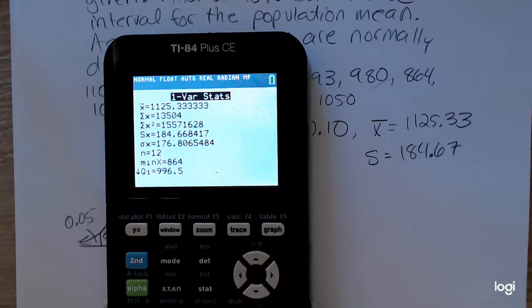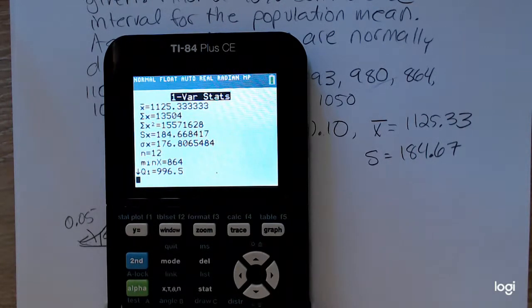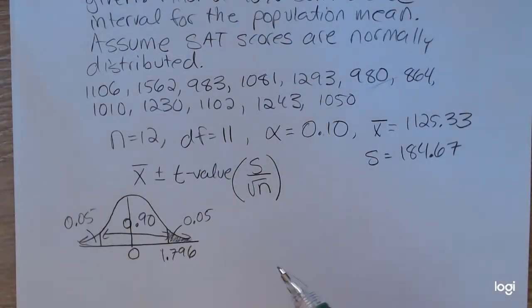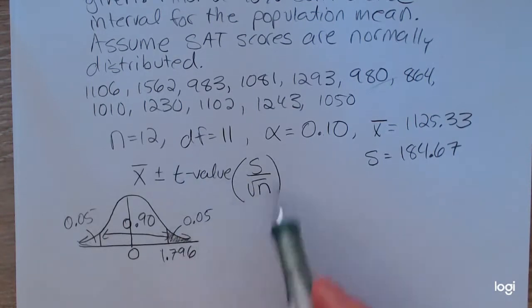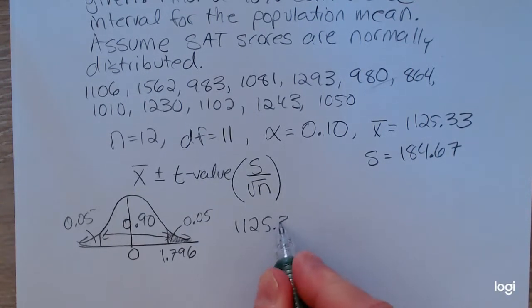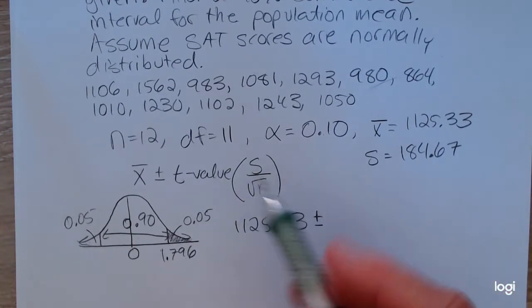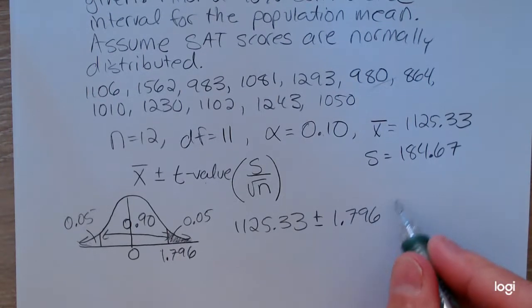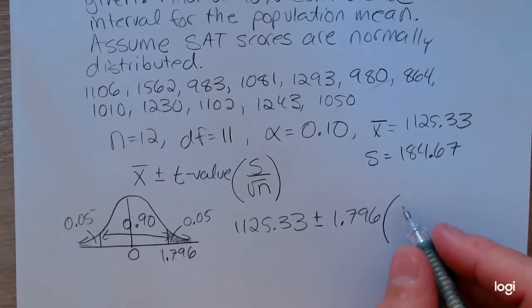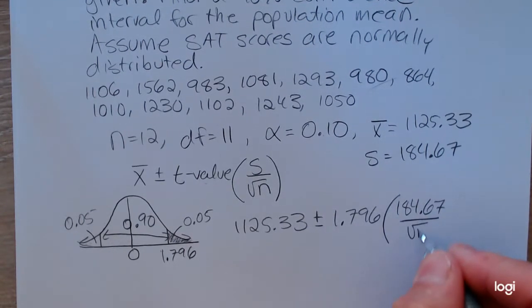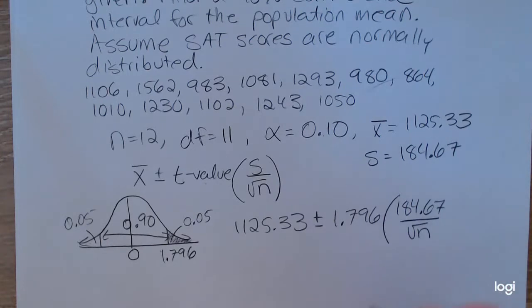And those are rounded to two decimal places. In a little bit, I'll show you how to get the confidence interval directly. But to do this formula by hand, these are the pieces you need. So plugging into this formula, I have 1,125.33 plus or minus this critical value, 1.796, times S, 184.67, over the square root of n. I could put 12 in there.